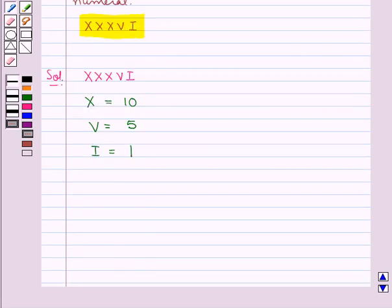We know that the repetition of a symbol in a Roman numeral means addition. So as you can see in this expression, X is repeated 3 times. So XXX is equal to 10 plus 10 plus 10 which is equal to 30.